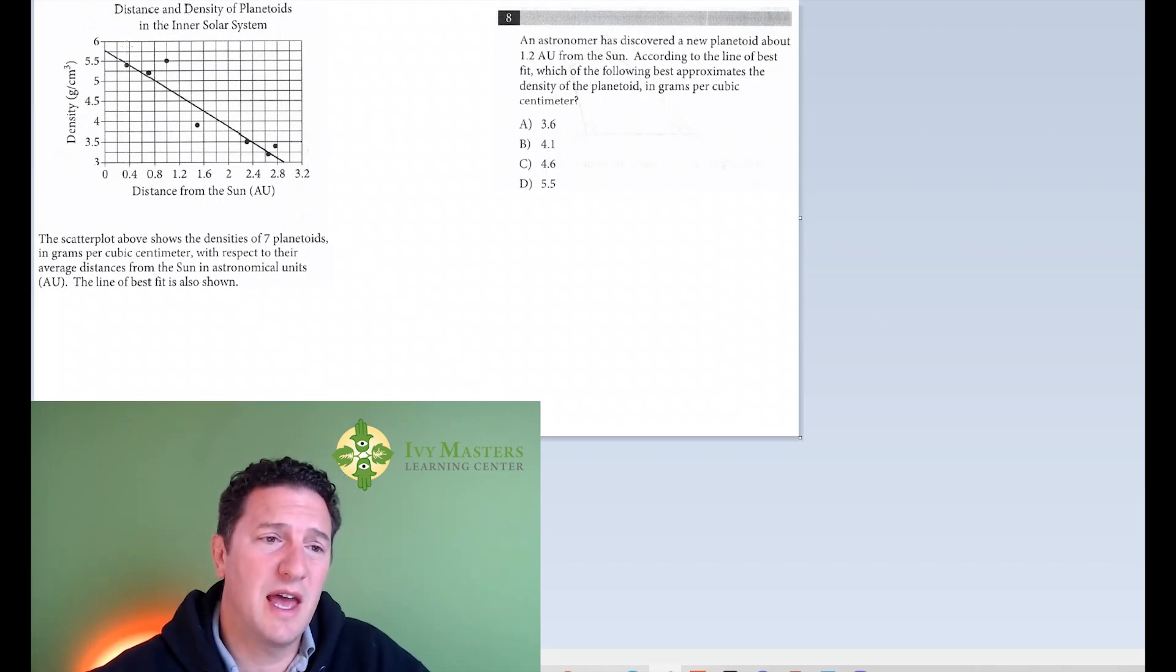Another thing to note is that the line is called the line of best fit. It's a prediction. The dots are the actual.